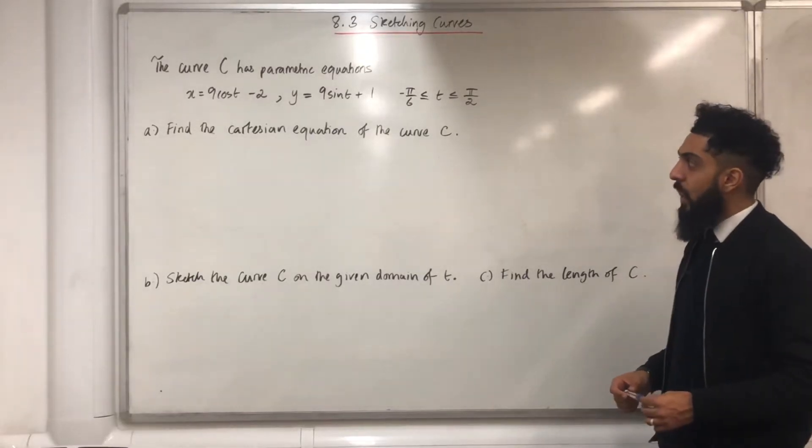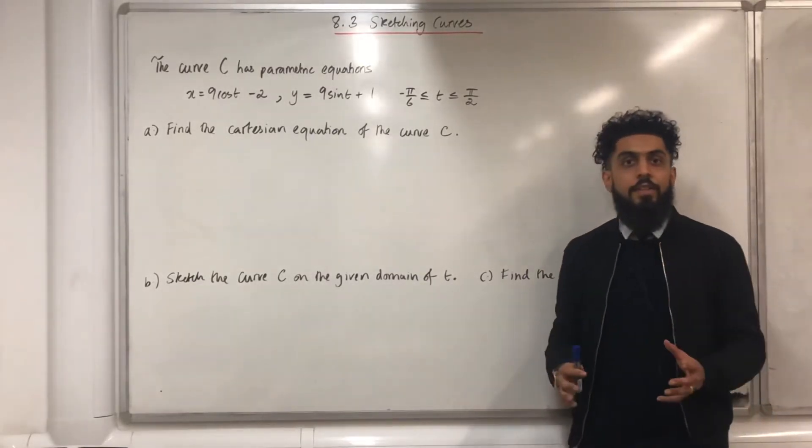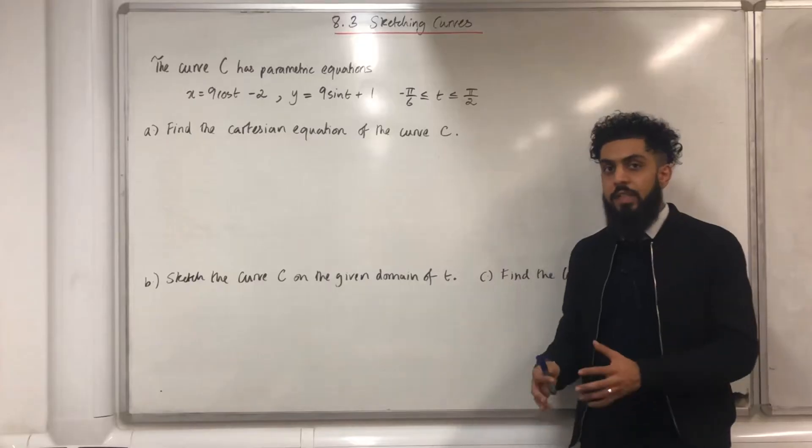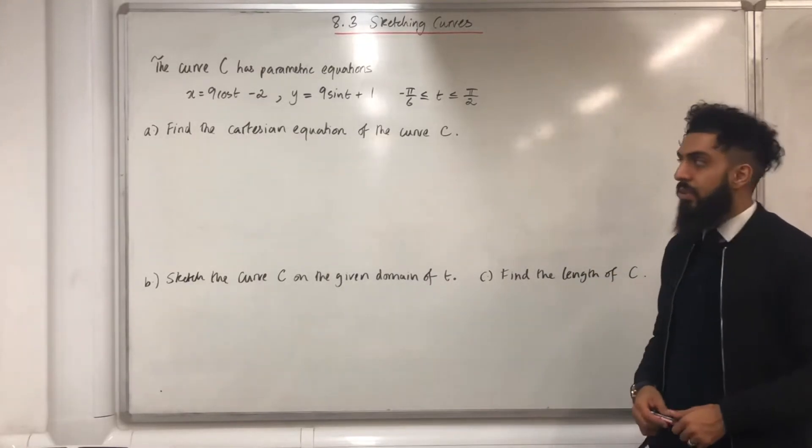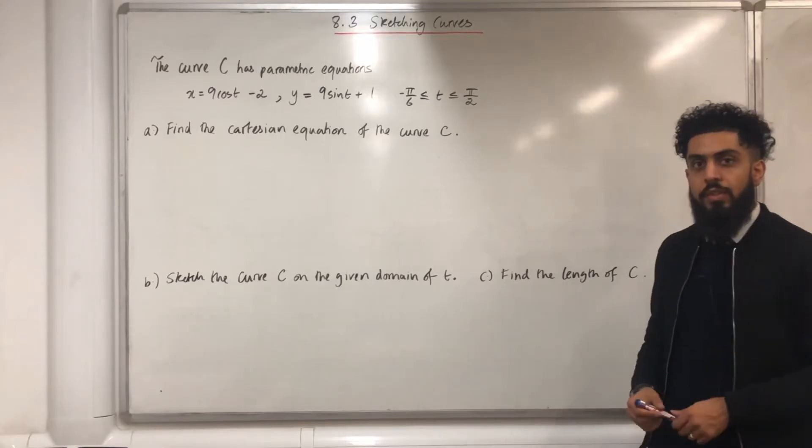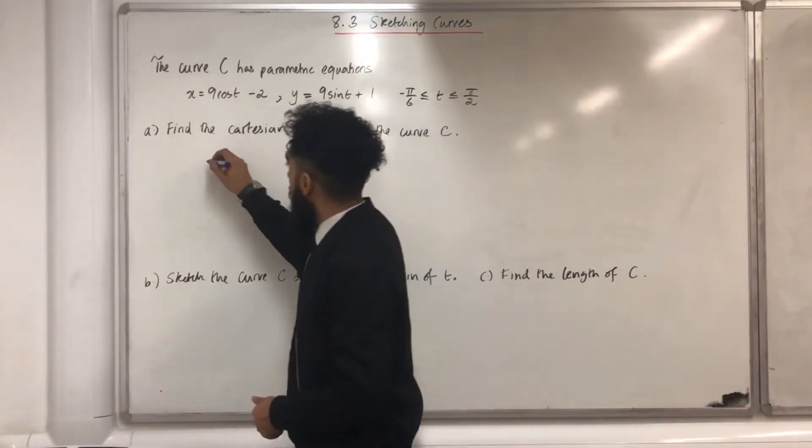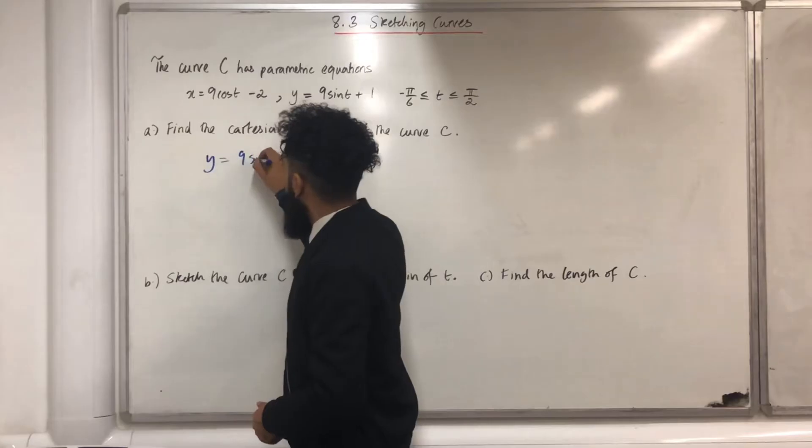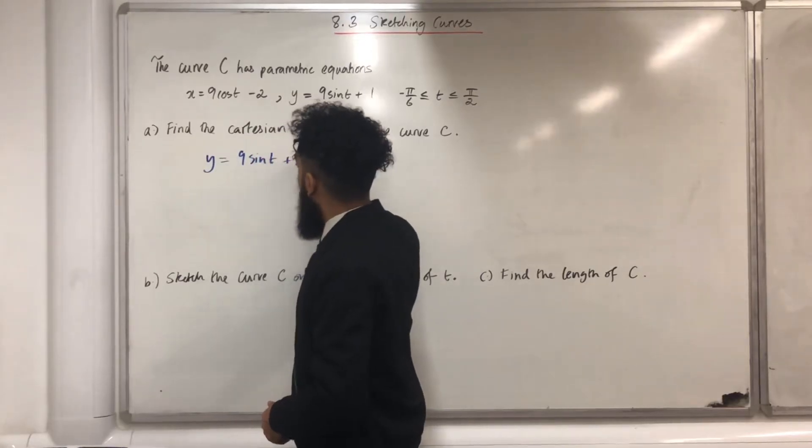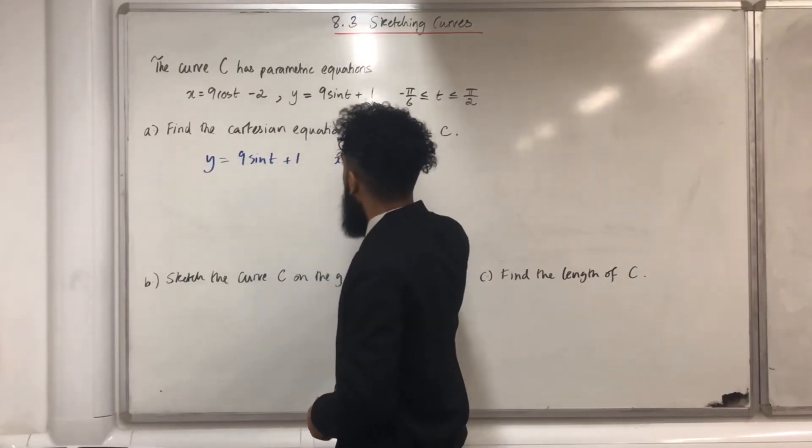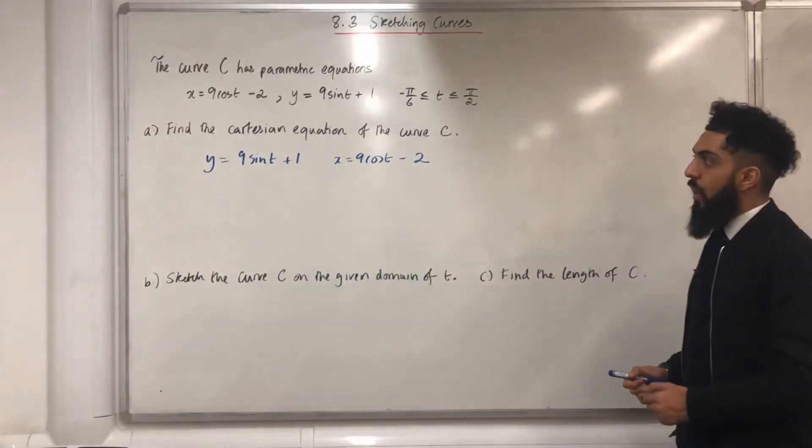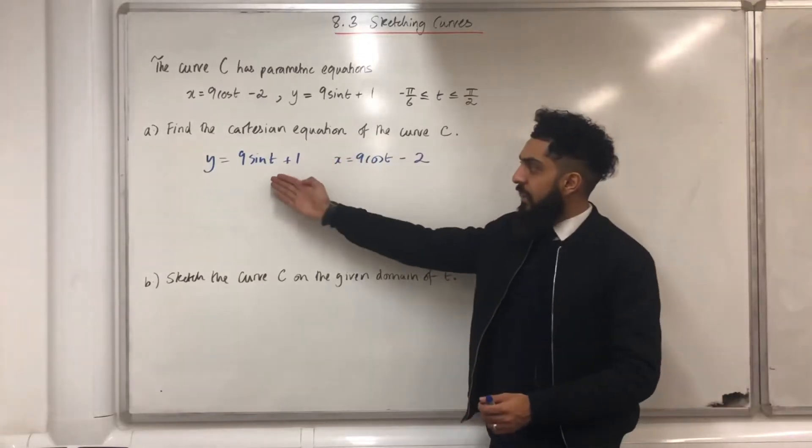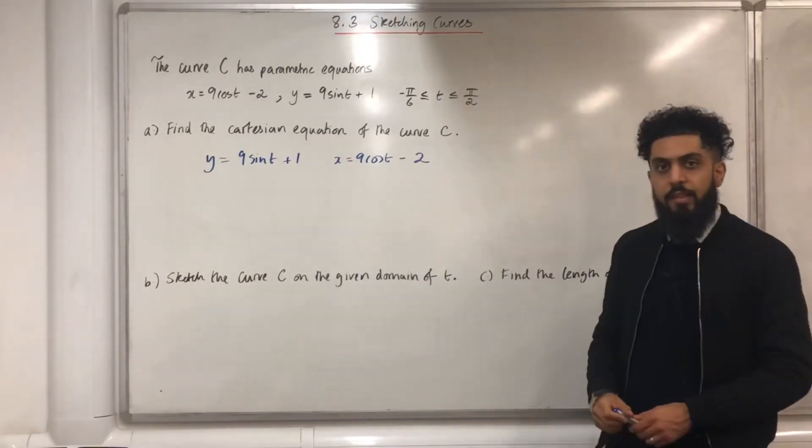Part A, find the Cartesian equation of the curve C. First of all, the Cartesian equation of the curve C is just an equation that connects y and x. The very first step is to write down the parametric equations. So I've got y equals 9 sin t plus 1, x equals 9 cos t minus 2. The second step is to make sin t the subject in this equation and cos t the subject in this equation.